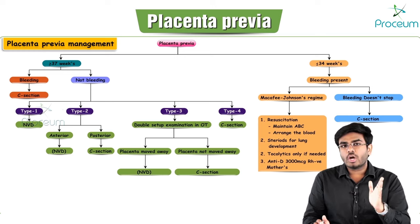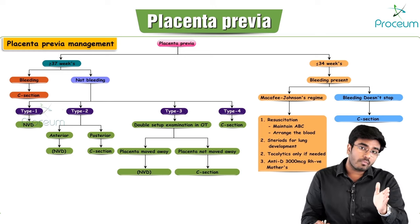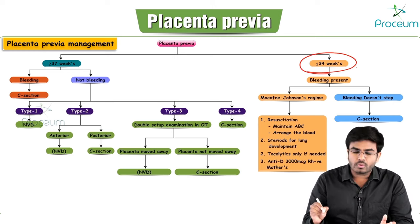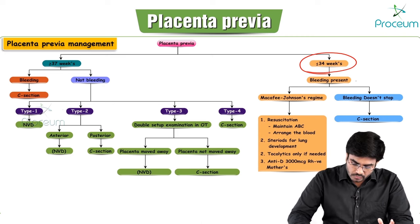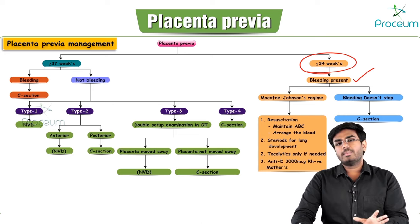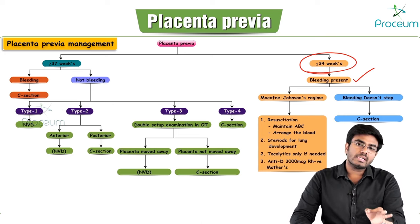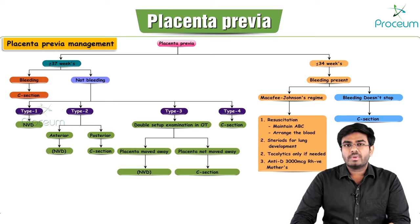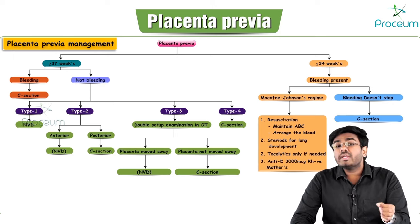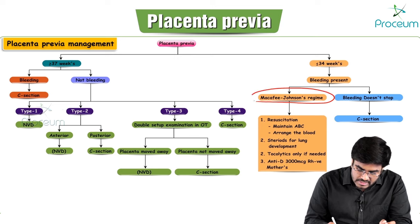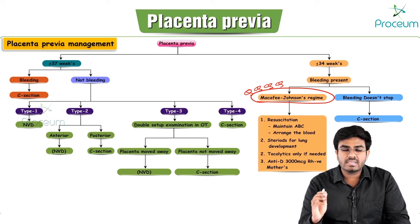Before 34 weeks with bleeding: attempt expectant management, also known as McCafe-Johnson's regimen. This involves resuscitation — maintaining airway, breathing, and circulation — and arranging blood transfusion. Steroids are given for fetal lung maturation. With this expectant management, 90% of the time the bleeding will stop and the pregnancy can continue.